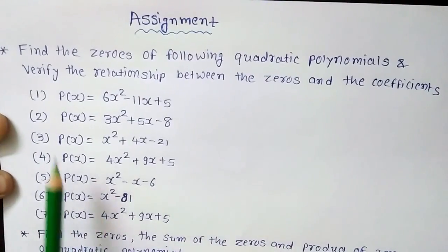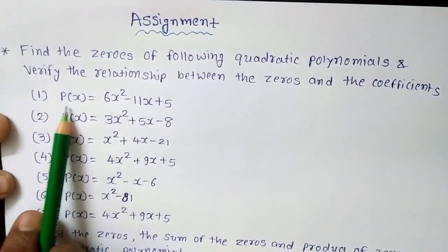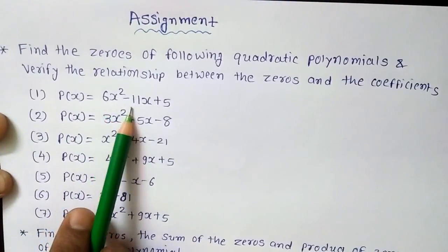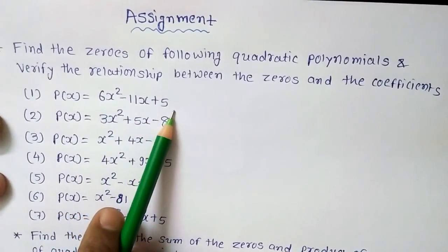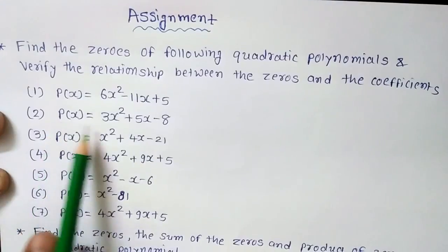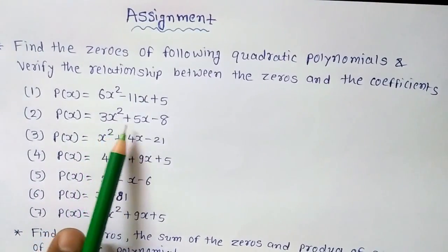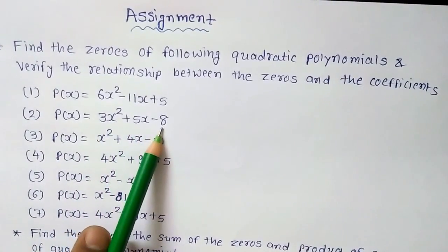Now which are the questions, let's see, question number 1, p(x) is equal to 6x² minus 11x plus 5. Another question, p(x) is equal to 3x² plus 5x minus 8.